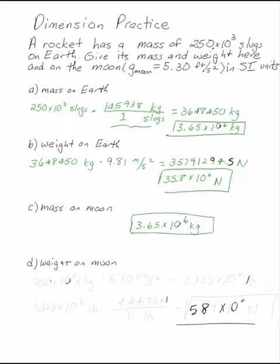To find the weight on the moon, you multiply by gravity. Now, the easiest way to do this is to go back to the original mass you were given, 250 times 10 to the third slugs, and multiply by the gravity you were given, 5.30 feet per second squared. A slug foot per second squared is a pound. So if you multiply this out, you have 1.325 times 10 to the sixth pounds.